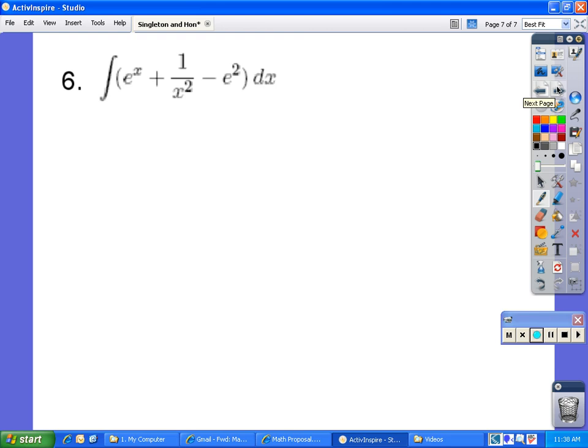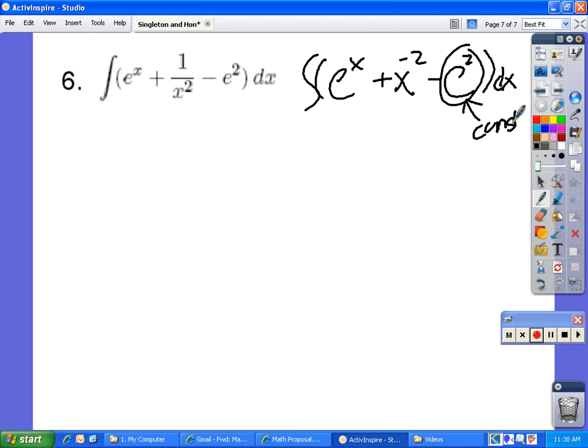We simplify this into the integral of ex plus x to the power of negative 2 minus e to the 2 dx. Now e to 2, it's a constant, just to remember.